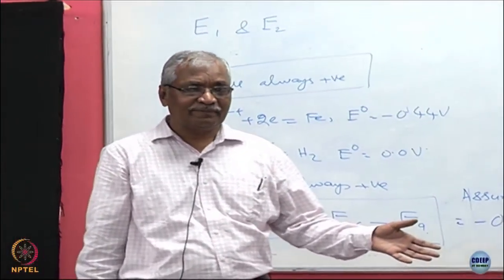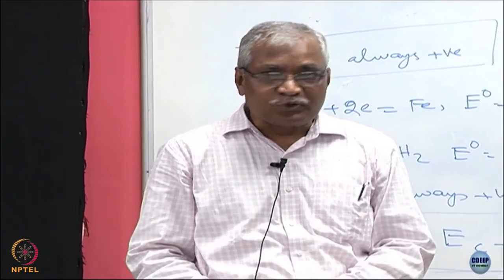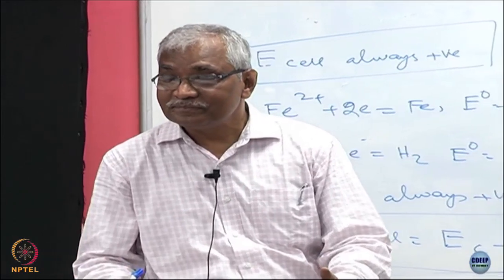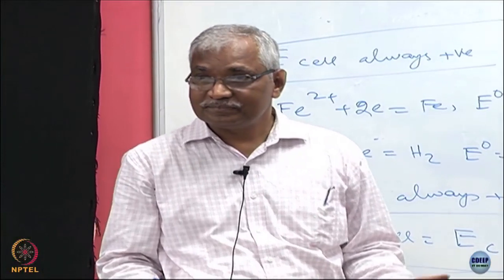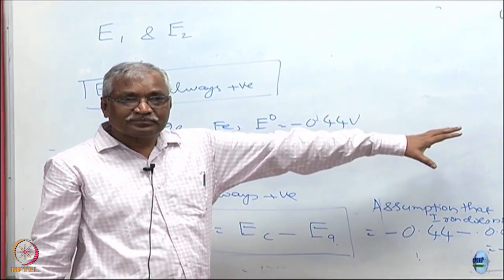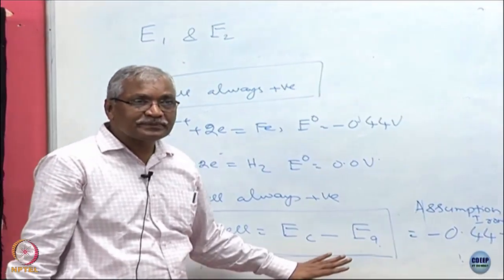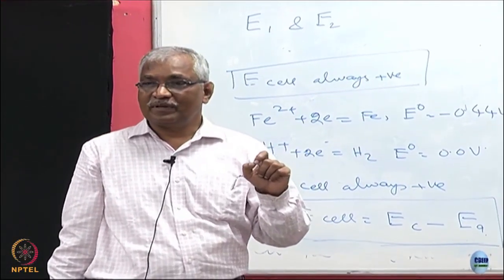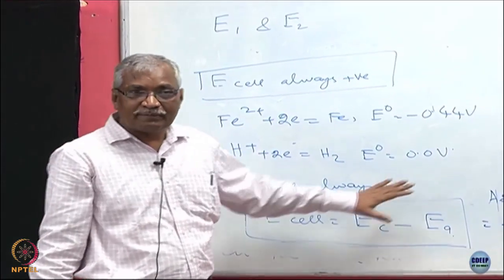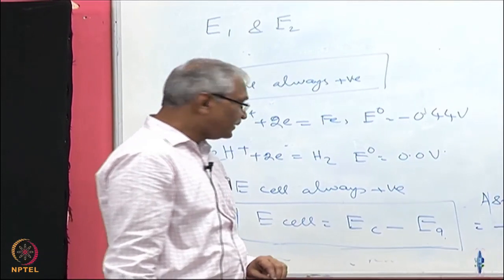I then correct myself: iron is actually the anode and hydrogen electrode is the cathode, giving E_cell = 0.0 - (-0.44) = +0.44 V, which is positive and spontaneous. The advantage of this approach is that I do not assume an oxidation potential or a reduction potential — I am free to assume wrongly and get corrected by the calculation. So you will never go wrong if you understand what is equilibrium, what is equilibrium potential, and what is cell voltage, and apply these concepts accordingly.